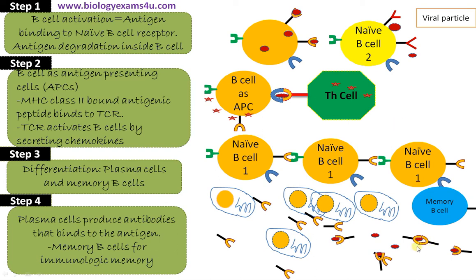The role of memory B cells is immunologic memory, or secondary response. If the same pathogen comes for the second time, this memory B cell will recognize the pathogen easily and induce a heightened immune response that will ultimately clear out the pathogen at the earliest.